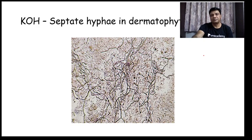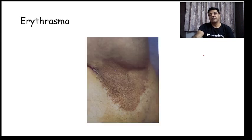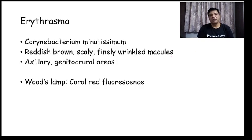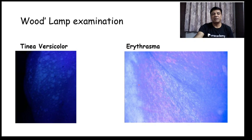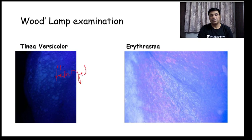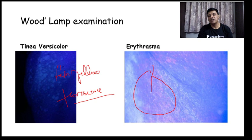Erythrasma is a bacterial infection caused by Corynebacterium minutissimum. It is seen as reddish-brown, scaly, finely-wrinkled macules in axillary and genitоcrural regions, giving a coral red fluorescence on Wood's lamp. On Wood's lamp: Tinea versicolor gives faint yellow fluorescence, while erythrasma gives coral red fluorescence.